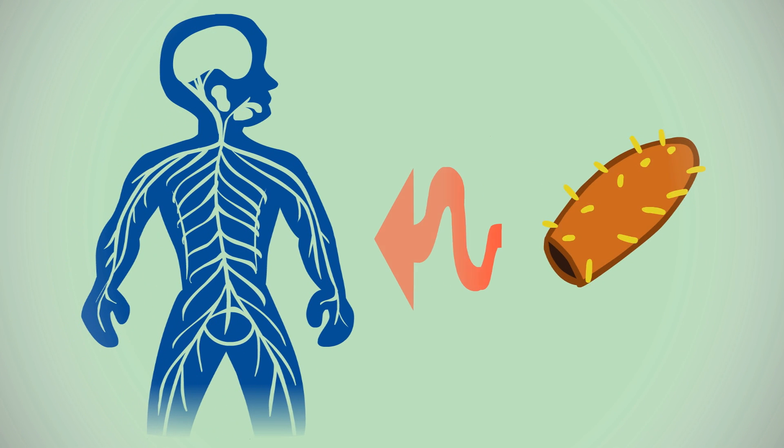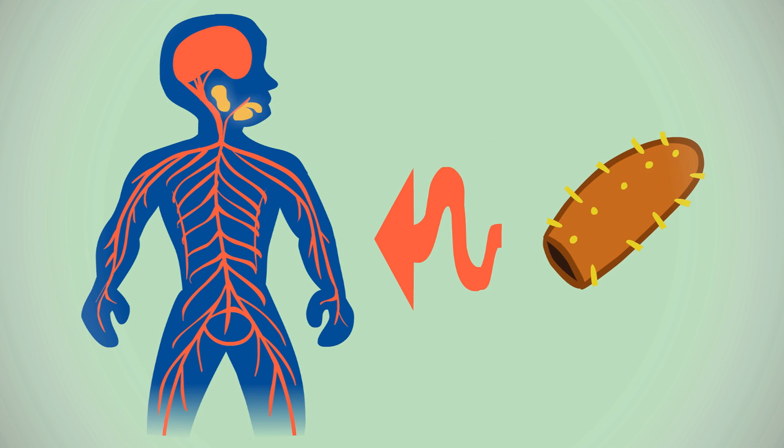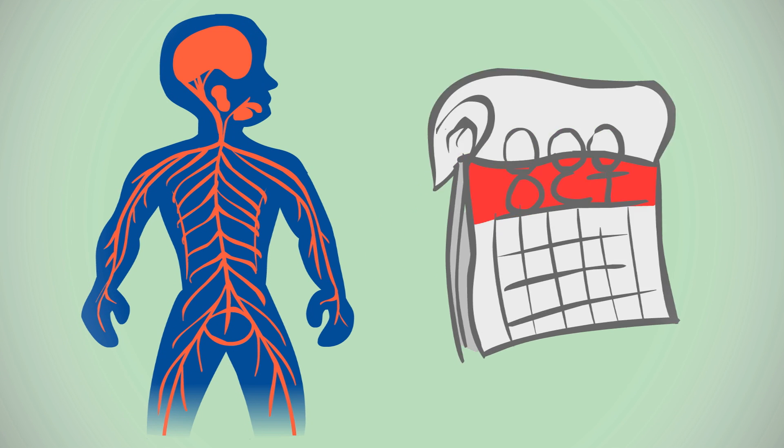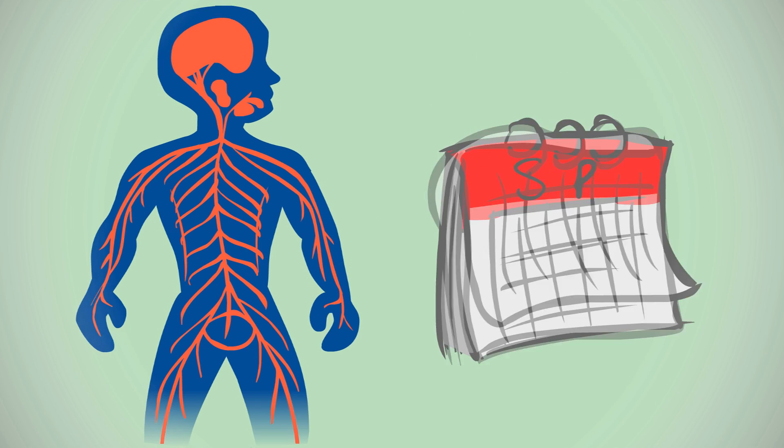Once infected, the virus travels through the nerves, then through the central nervous system, and all the way up to the brain and salivary glands. The process can take anywhere from about a week to several years with no symptoms, but most people get symptoms after about one to three months.